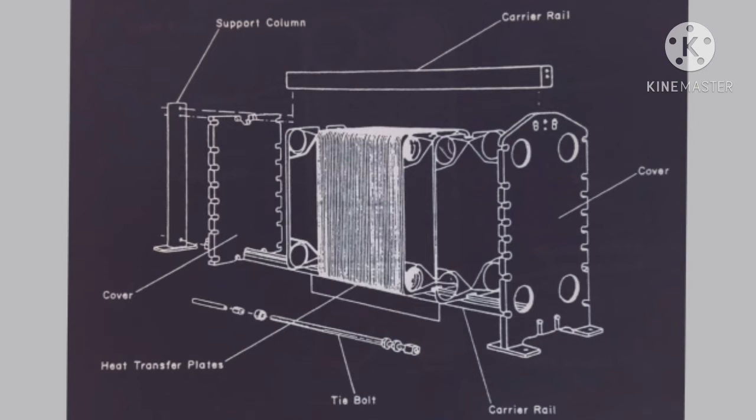That covers the advantages of plate type heat exchangers. Now the disadvantages. First disadvantage is initial cost is high, because plate type heat exchangers are made up of titanium plates, and titanium plates are expensive. Second disadvantage is finding leakage is difficult, since pressure testing is not as easy as with shell and tube type heat exchangers.